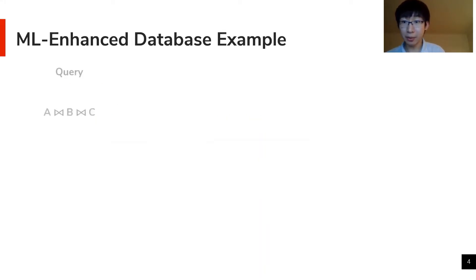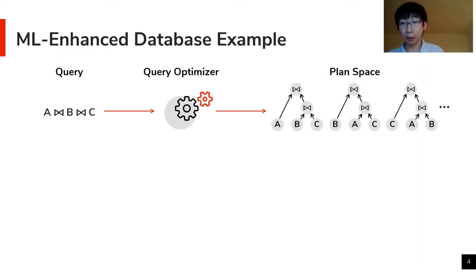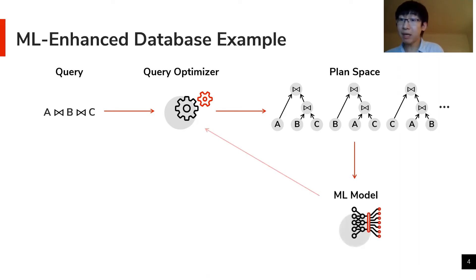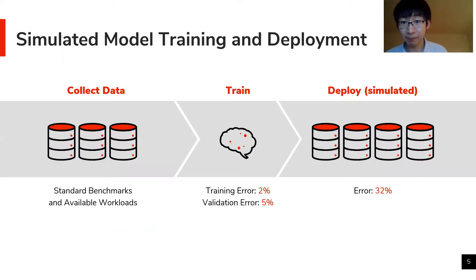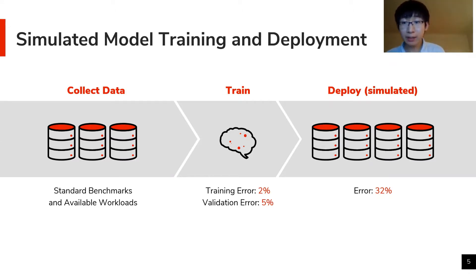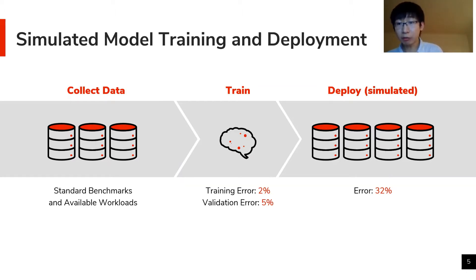When the query optimizer sees a query, it enumerates a set of alternative query plans, or the plan space. The machine learning model can then make predictions on this plan space to estimate which plan is cheaper, and such predictions are fed back to the optimizer to help decide the best plan to execute. We simulated a training and deployment cycle where we train with data collected from some standard benchmarks and available real-world workloads, and deploy on a set of new databases not seen before in training.